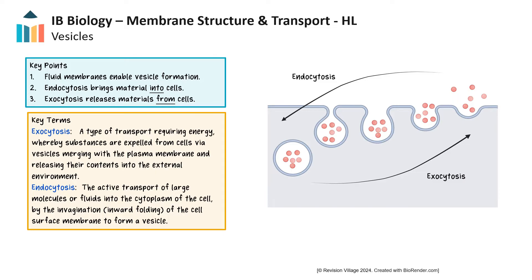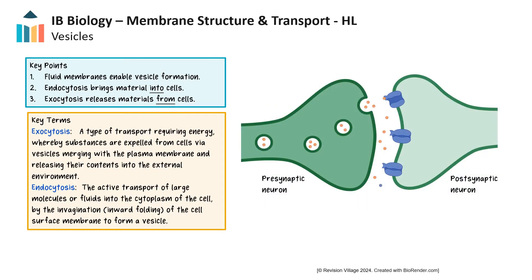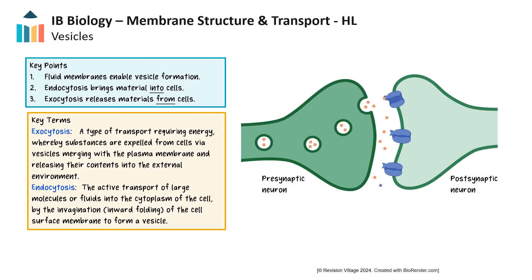An example of exocytosis is seen in the synapse, where neurotransmitters are released from the presynaptic neuron through exocytosis, then diffuse across the synapse.